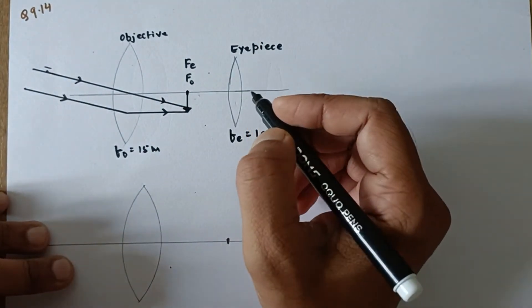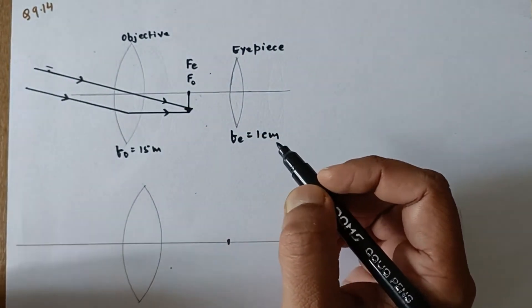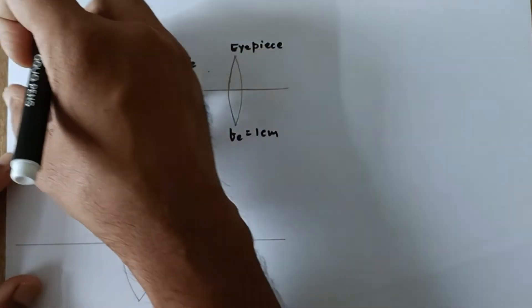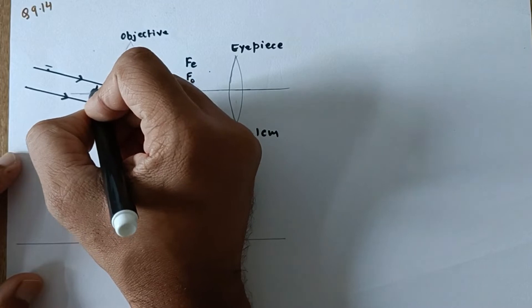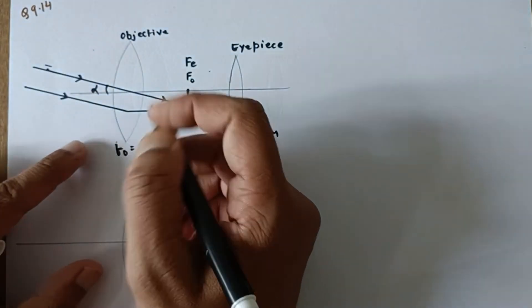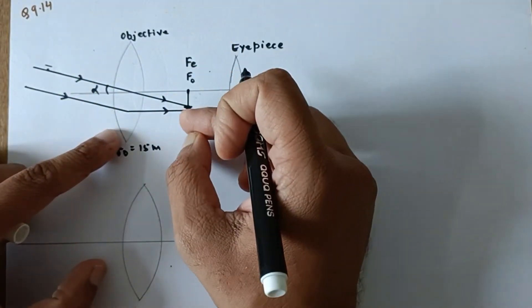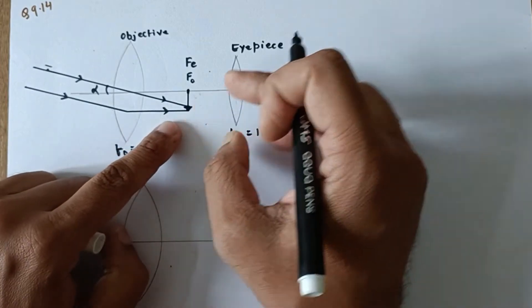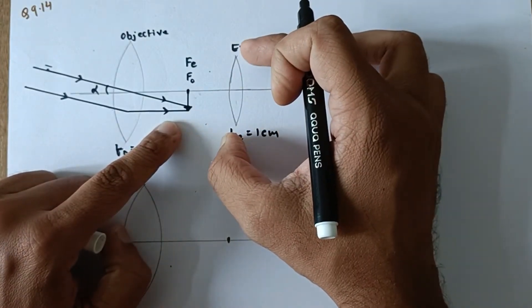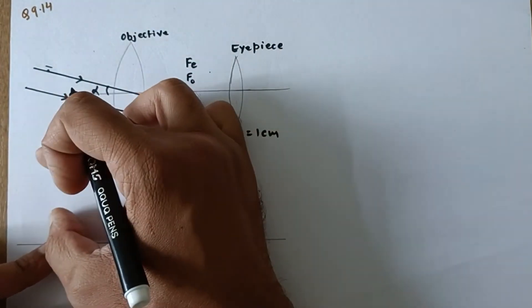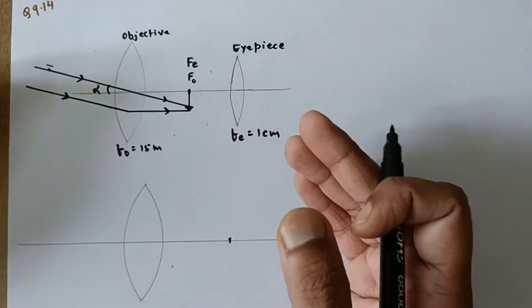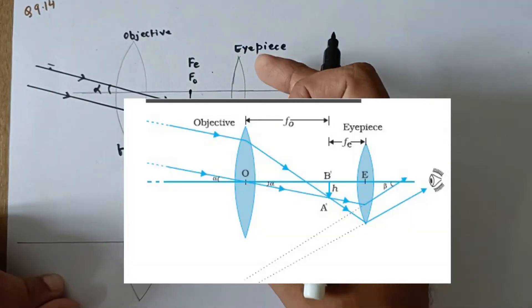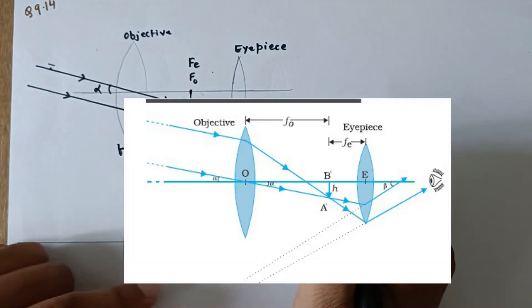We are supposed to find the angular magnification of the telescope, which means the object is at infinity. It subtends or makes some angle alpha with the objective and the image is formed at focal plane. This image is going to behave as the object for this eye lens and the final image is going at infinity because it is not specified that the final image is at D. We will follow the textbook diagram which says that the final image is formed at infinity.